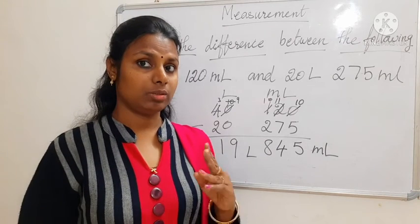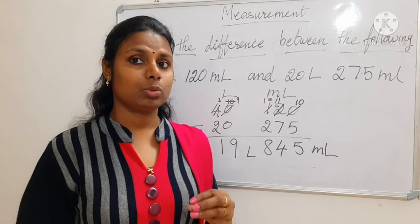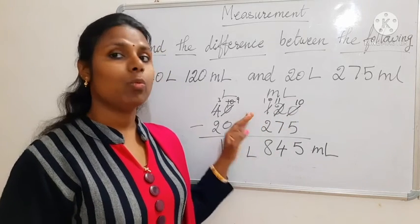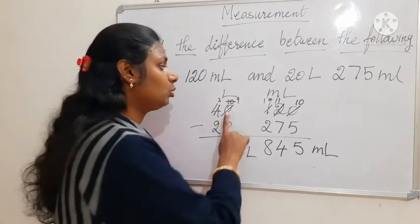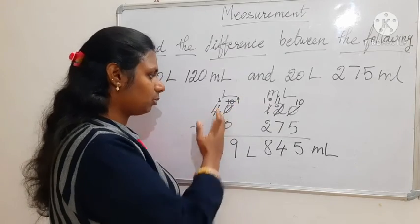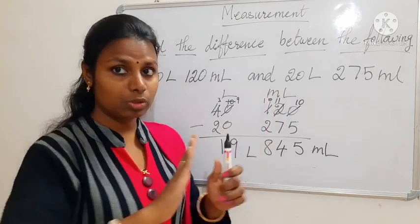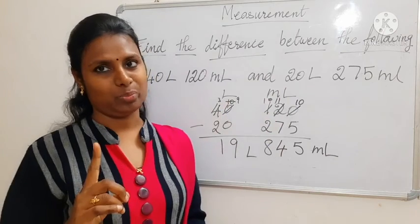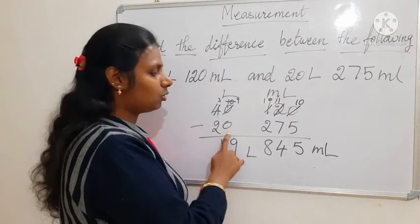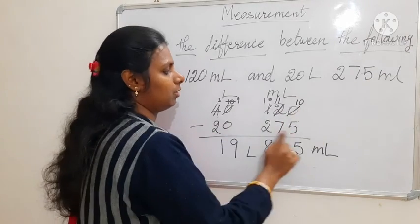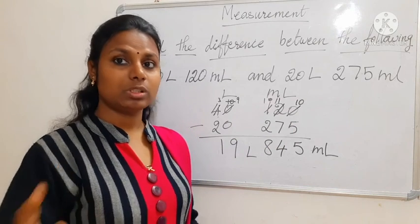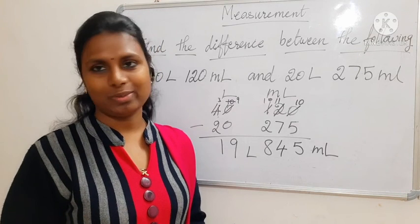So you have to remember especially 2 to 3 things. First: how many digits you are supposed to write — remember that. Second: when you see which is the big number or small number, you have to see both units together, not separately. You should not look at litre alone and milliliter alone — together it makes one number. So 40 litre 120 milliliter is the big one on top, and 20 litre 275 milliliter goes down. Watch this video again and again, remember each and every point, and you will not make mistakes.